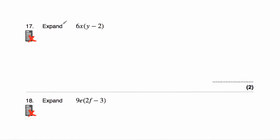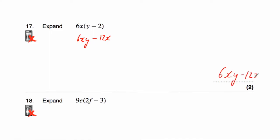Question number seventeen asks us to expand 6x(y − 2). We're going to multiply what's inside the brackets by 6x. Six x times y — we just put them together to get 6xy, making sure our letters are in alphabetical order. Then we've got our minus. Six x times two — six times two is twelve — so it's going to be 6xy − 12x.